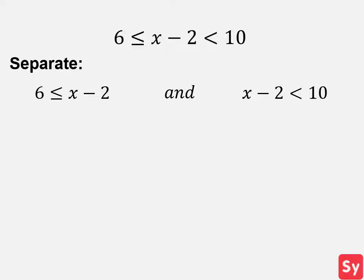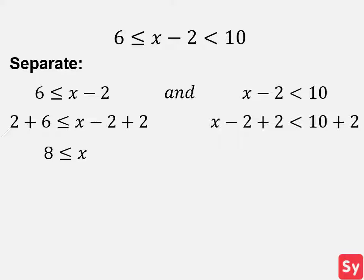First, we will solve 6 is less than or equal to X minus 2. We will add 2 to each side of the inequality. Then simplify and get X is greater than or equal to 8. Now we move on to the next inequality. We add 2 to each side, then simplify and get X is less than 12.